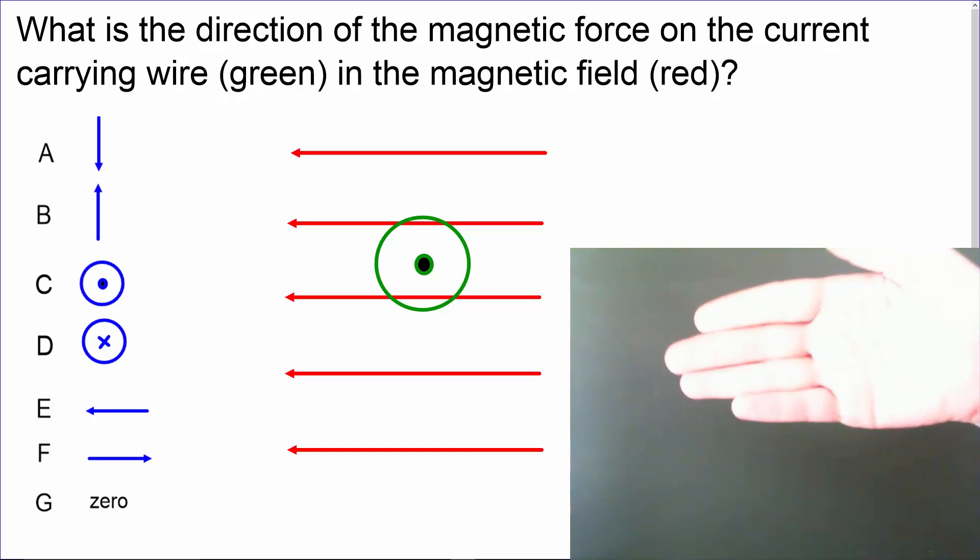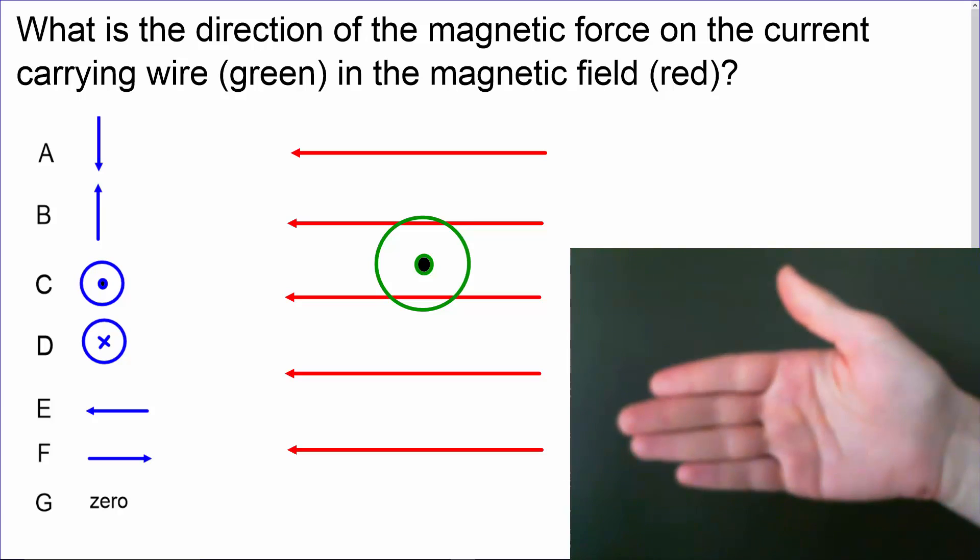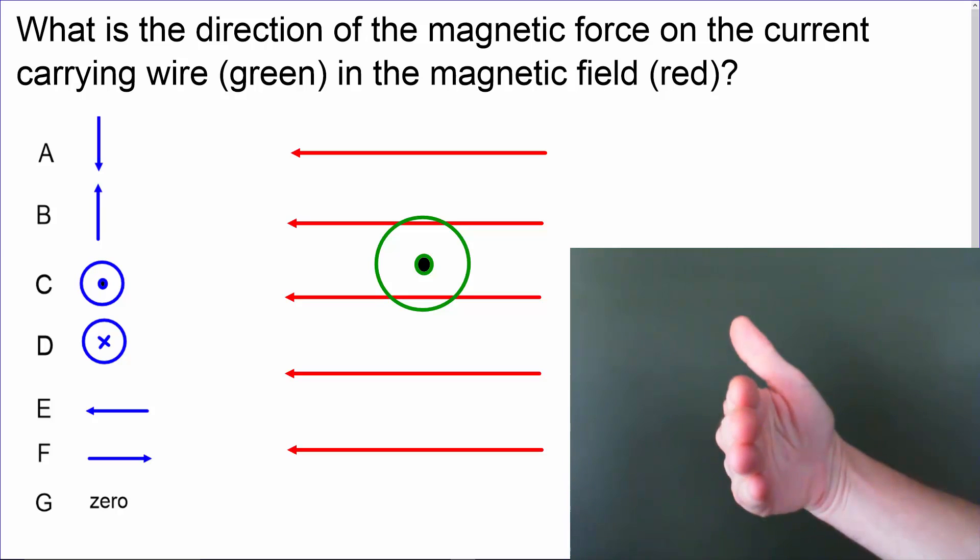We'll begin by taking our right hand and pointing our fingers in the direction of the conventional current, which, because the green is a dot, is pointing out of the page. So we need to point our fingers out of the page.